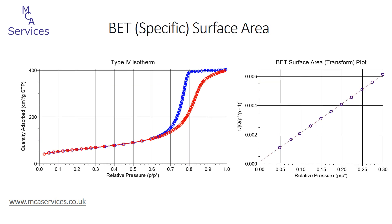This is an isotherm of a mesoporous silica alumina. The shape of the isotherm is really quite different from the type 1 isotherm we just saw, and this is classified as a type 4 isotherm. There's a complete lack of microporosity, but instead there's an increase in adsorption volume starting at around about 0.65 relative pressure, and that reaches a plateau as the isotherm approaches saturation. There's also very distinct hysteresis between the adsorption and the desorption isotherms.